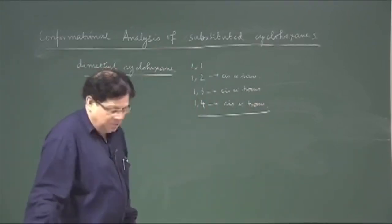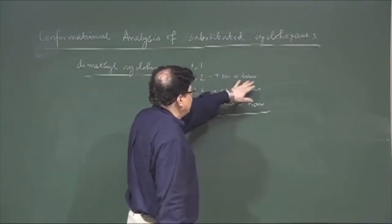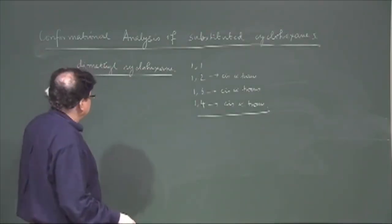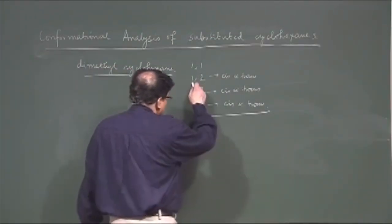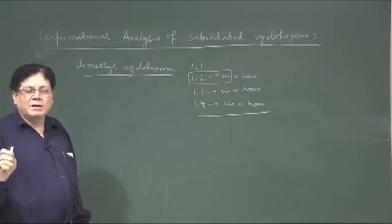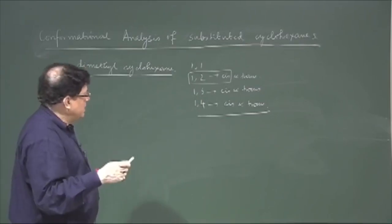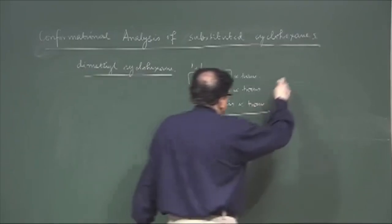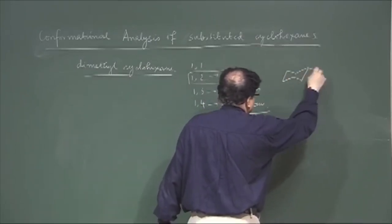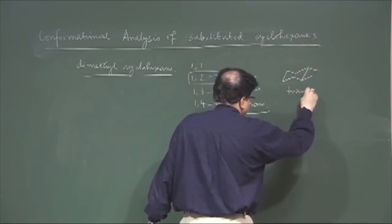These cis and trans isomers differ in energy and differ in their optical activity. To summarize: 1,2-cis-dimethylcyclohexane exists as a non-resolvable DL pair because by flipping it goes to its mirror image. The trans compound, however, is optically active — this is the preferred configuration of the trans, which is optically active.